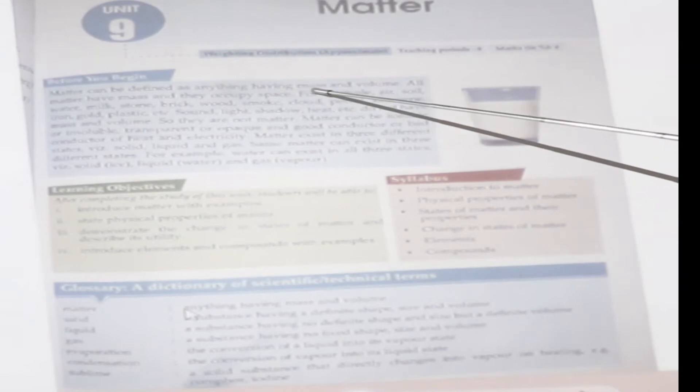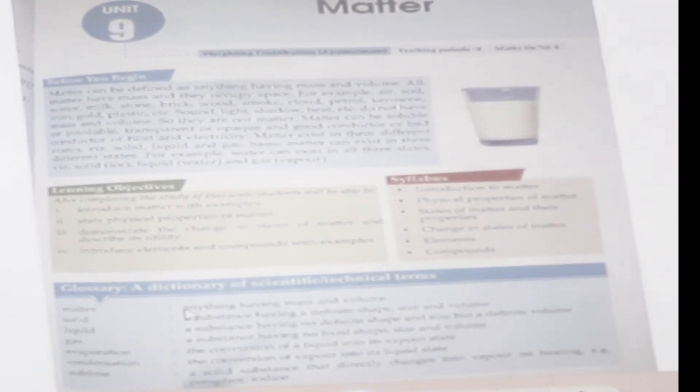Before we begin, matter can be defined as anything having mass and volume. Anything having mass and volume is known as matter. All matter have mass and they occupy space. For example, air, soil, water, milk, stone, brick.